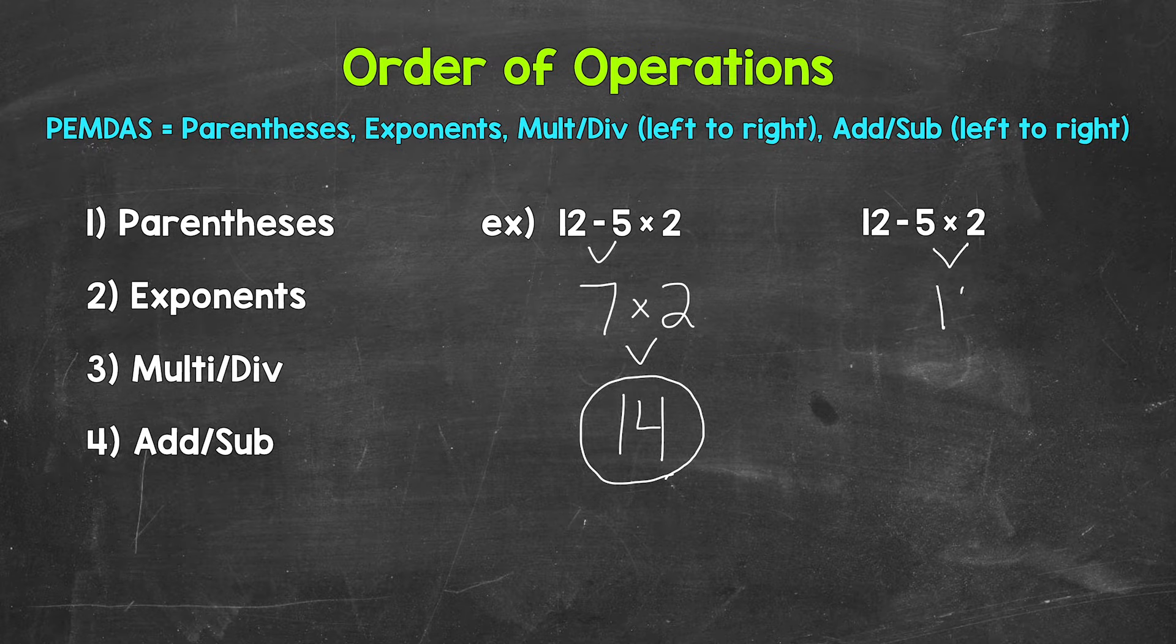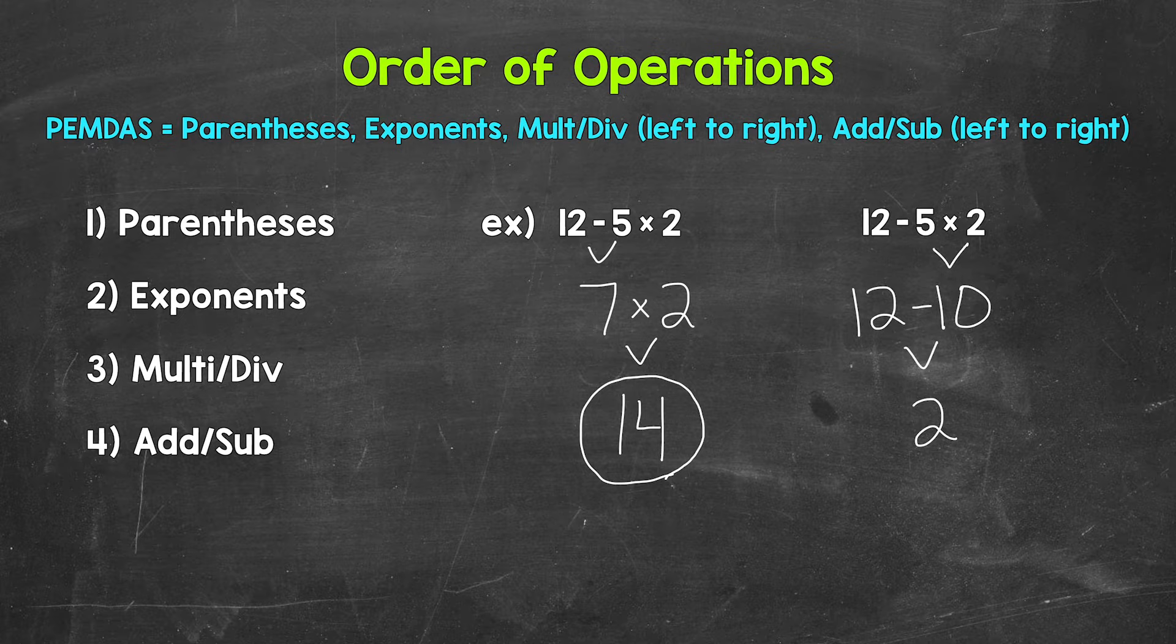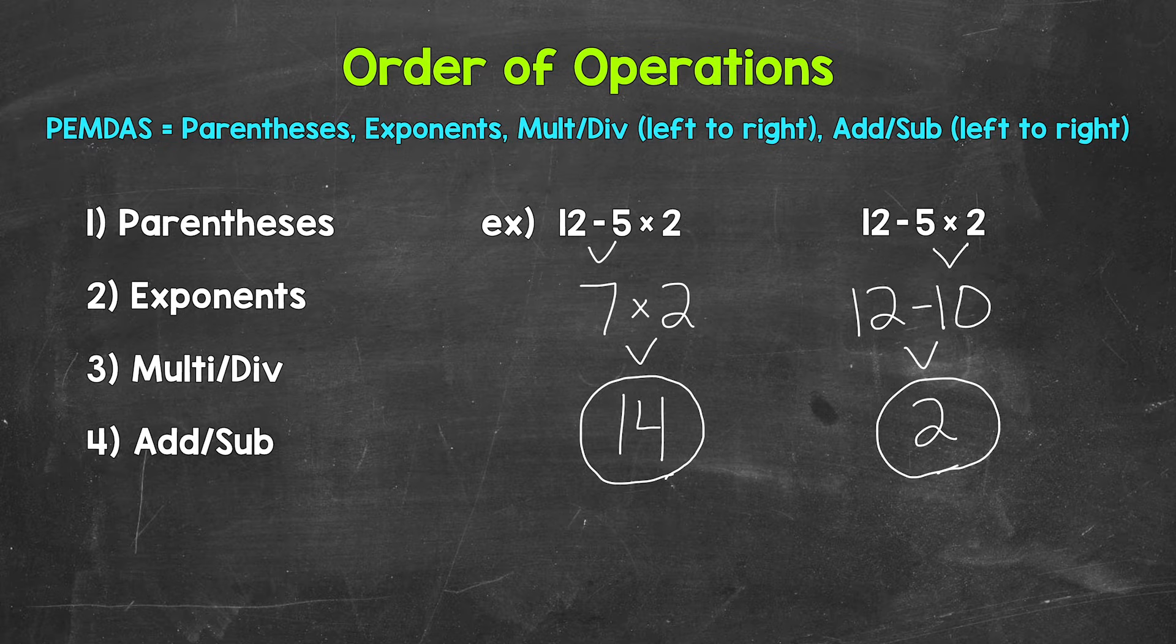5 times 2 is 10. Bring down everything we did not use. So the 12 and the subtraction sign. So now we end with 12 minus 10, which is 2.